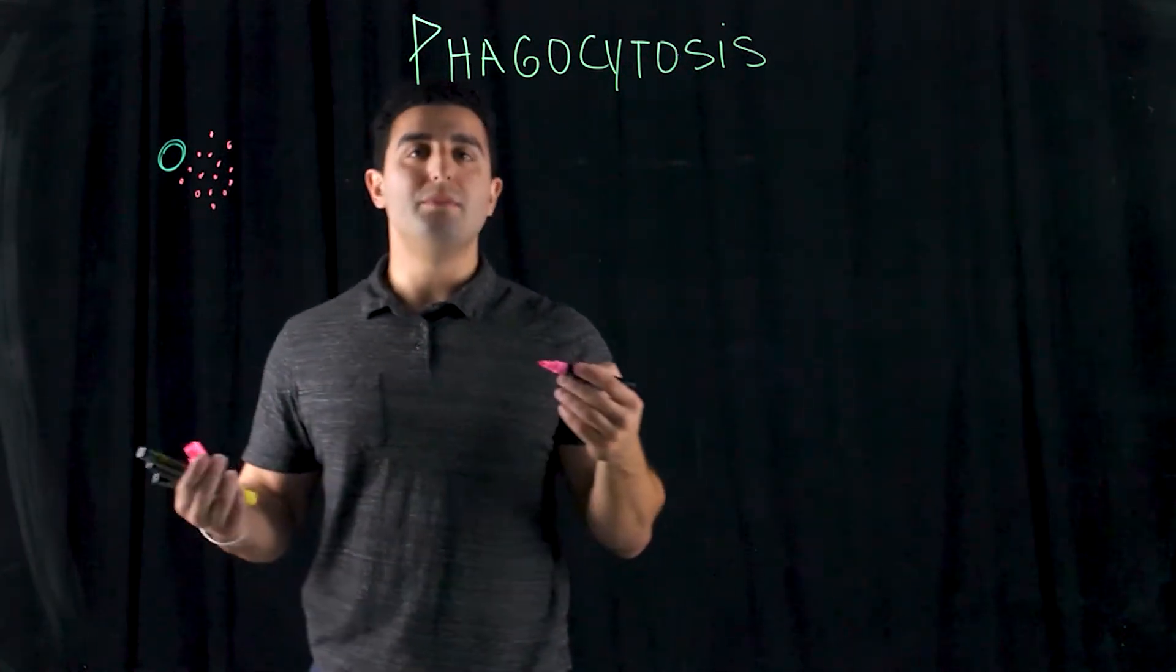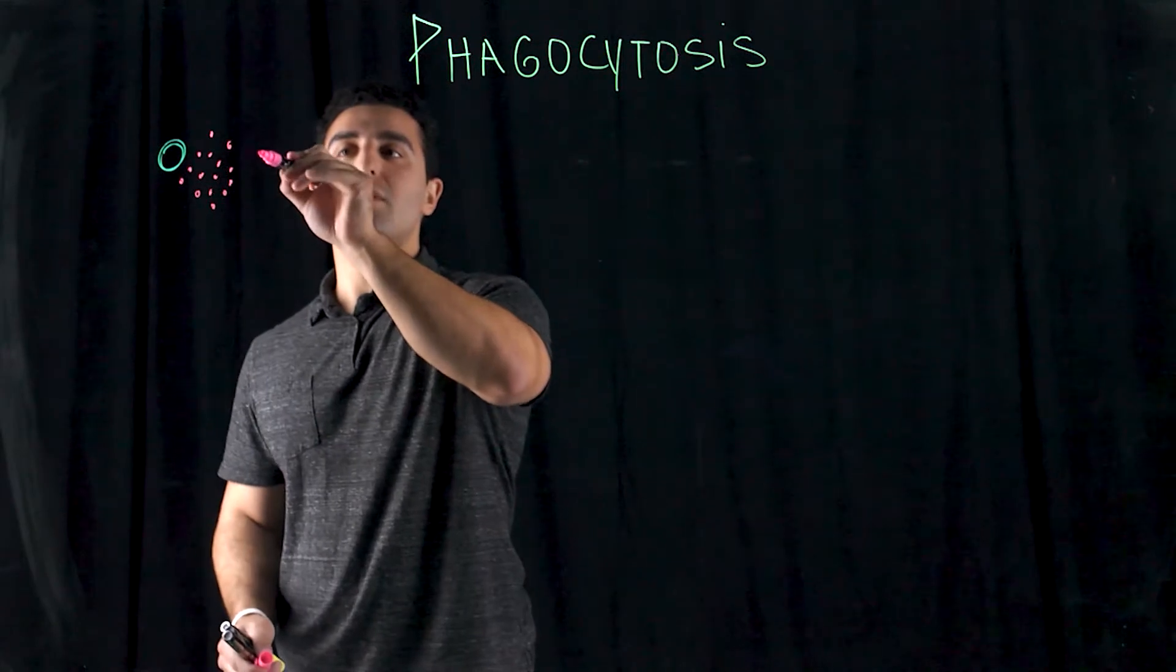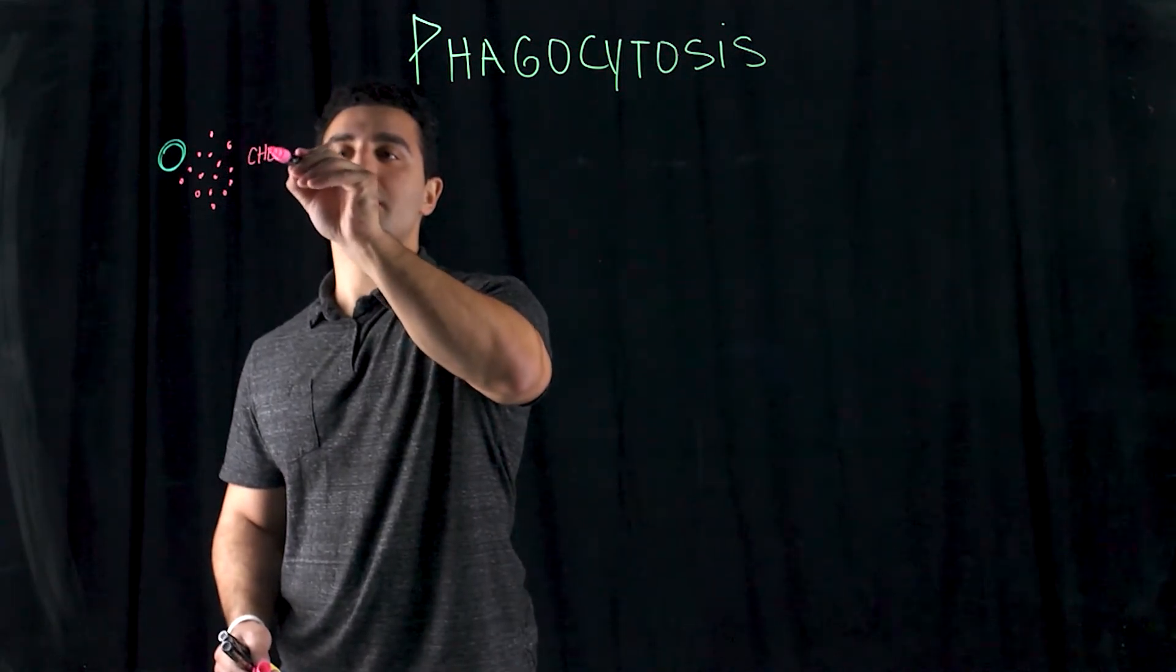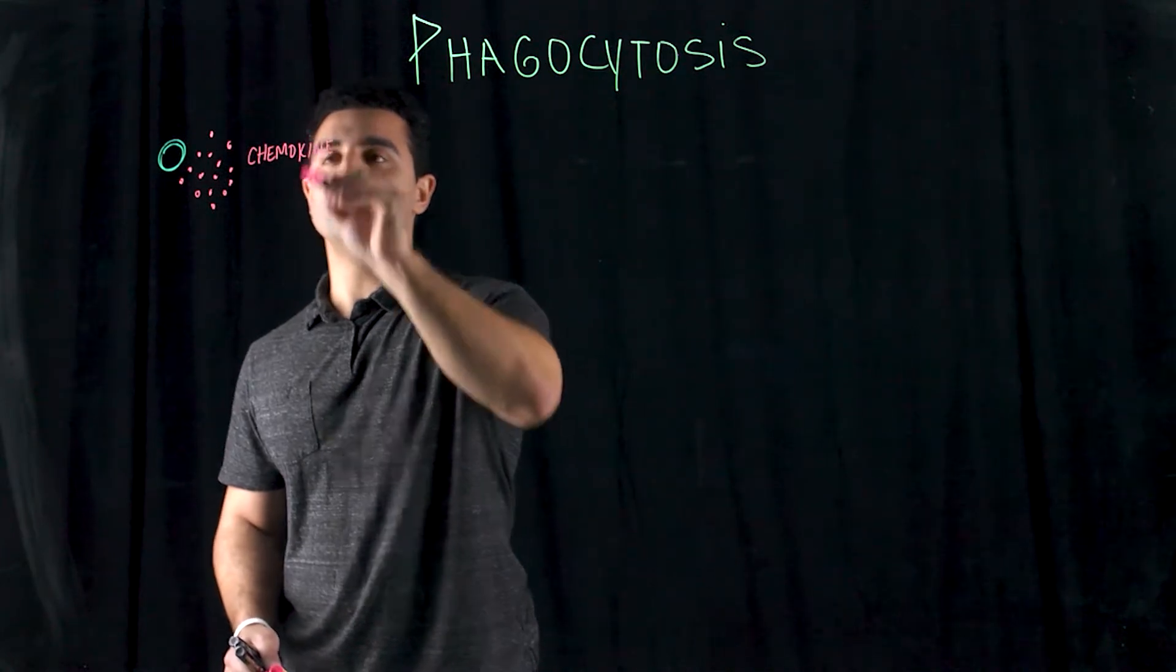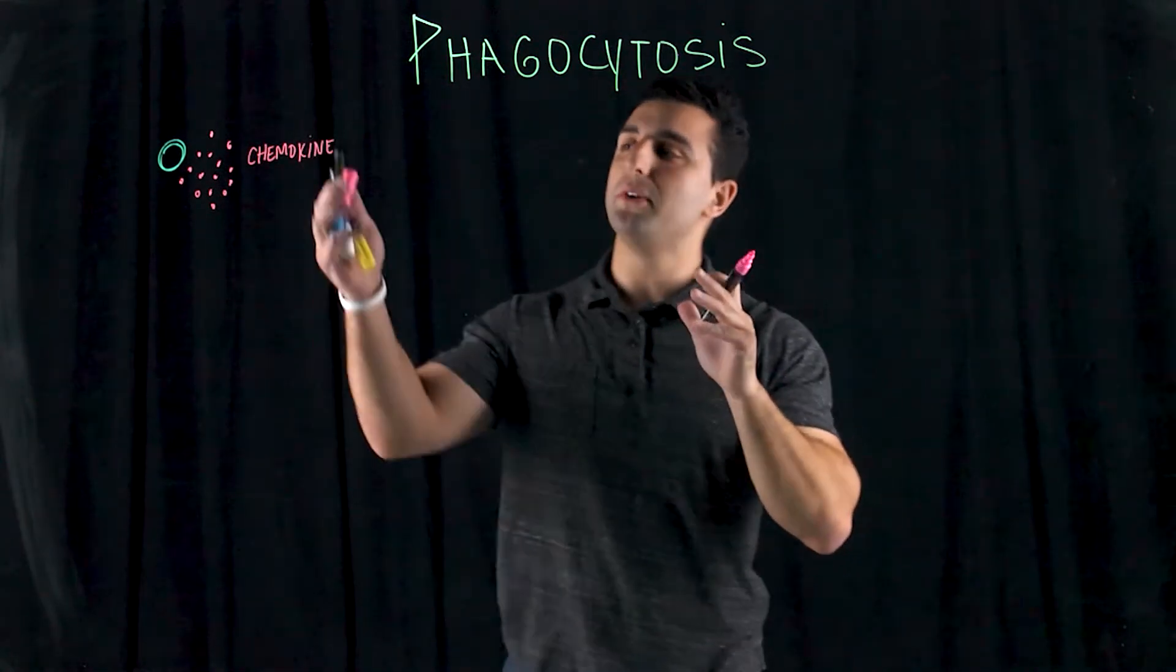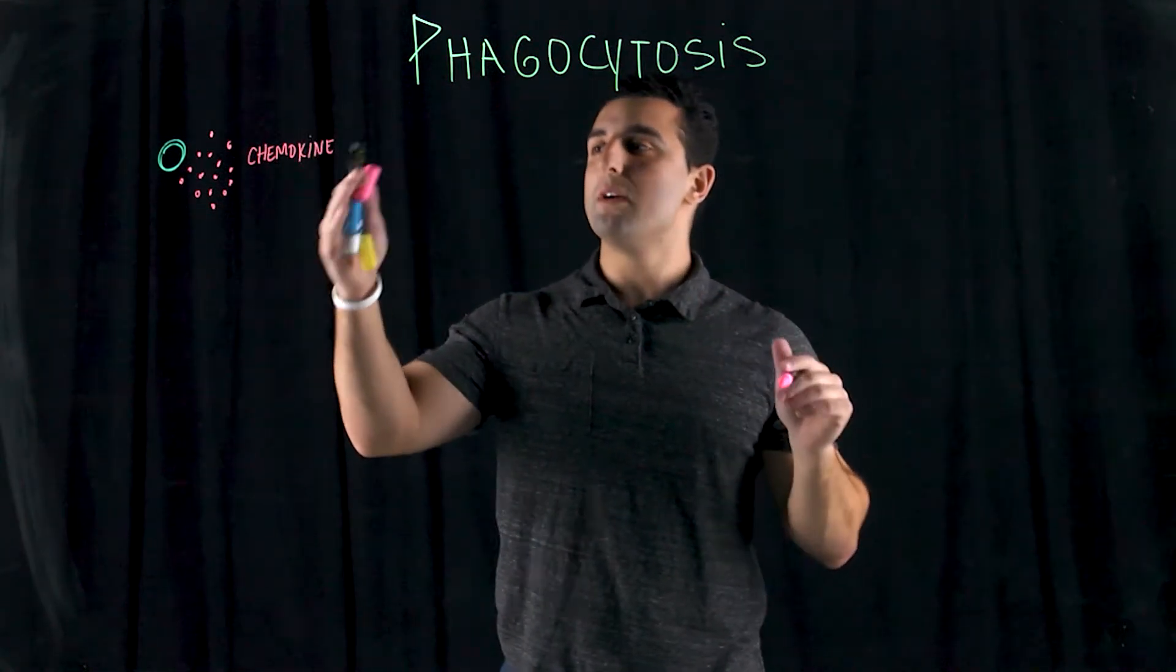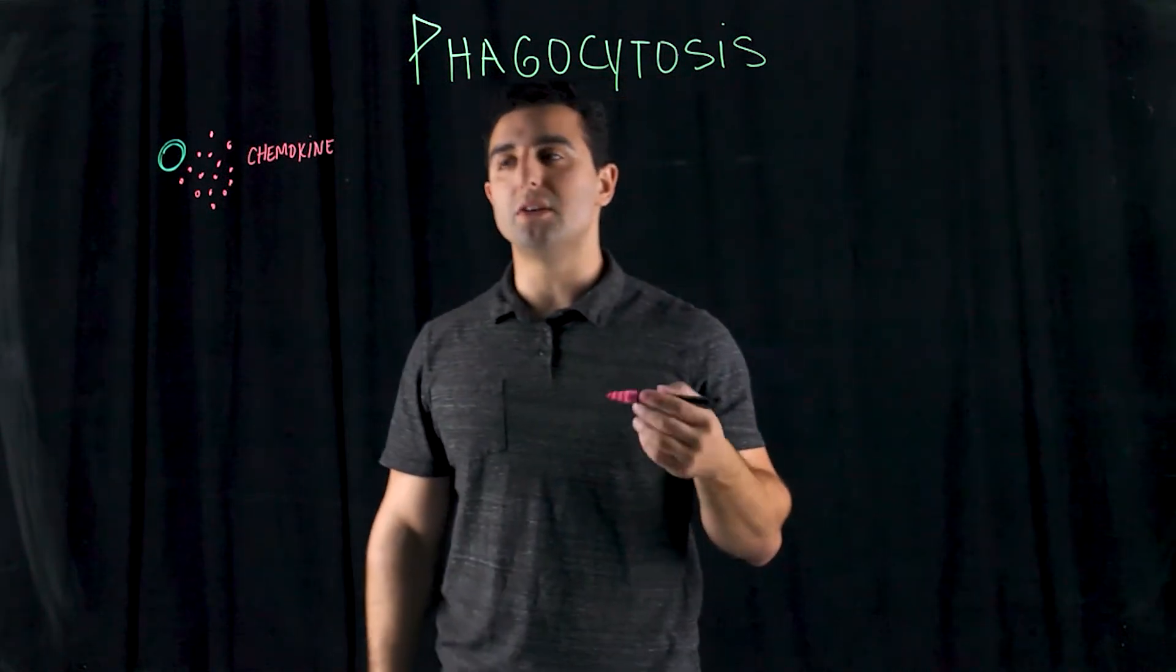Cytokines play various roles. One specific subcategory of cytokines is called chemokines. So chemokines are the special breed of cytokines where it allows for the process of mobility. It's called chemotaxis.